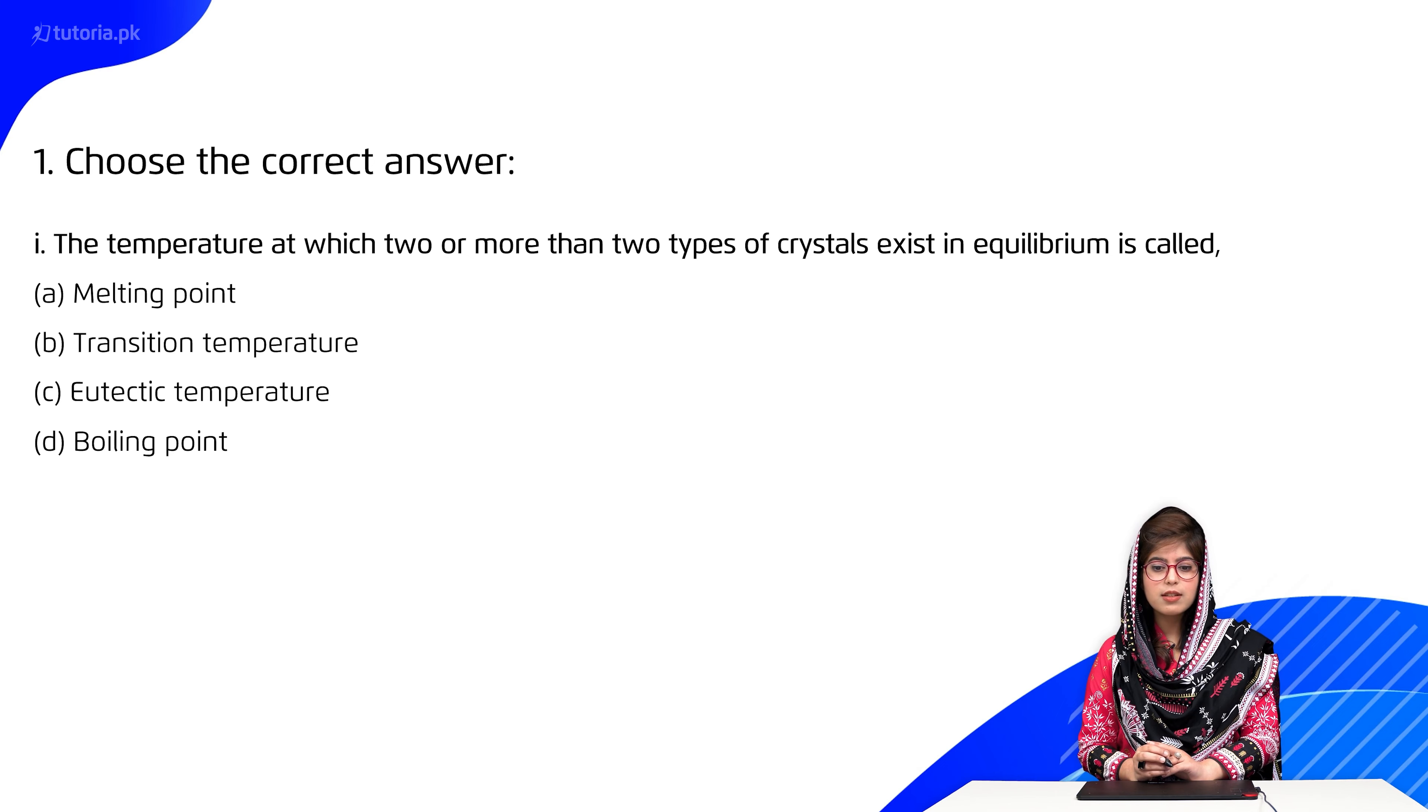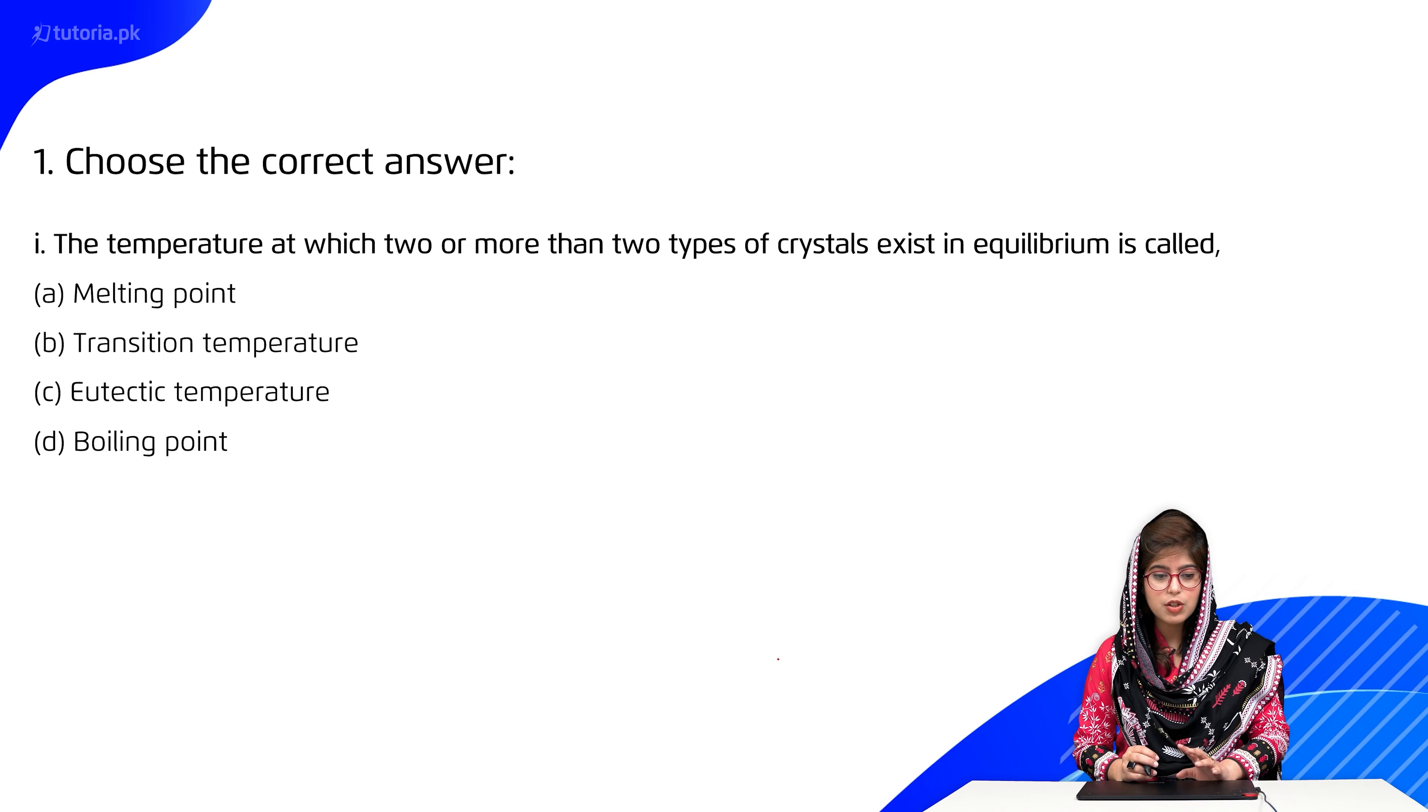The temperature at which two or more than two types of crystals exist in equilibrium is called: A) melting temperature, B) transition temperature, C) eutectic temperature, D) boiling point. So it's option number B, that is transition temperature. Transition temperature pe two ya more than two types of crystals coexist in equilibrium.